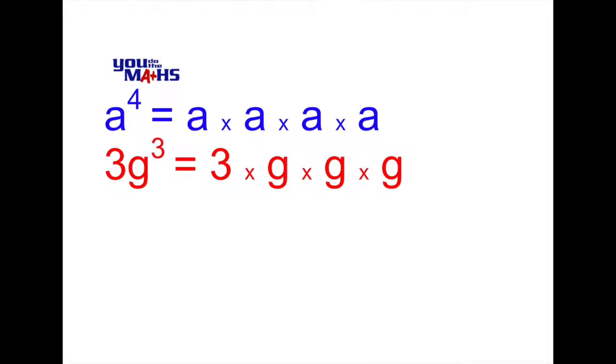Here g is raised to the power 3, so we multiply g out three times. The 3 at the front, the whole number, stays there - it isn't raised to an index.